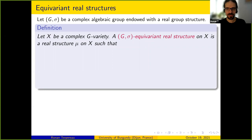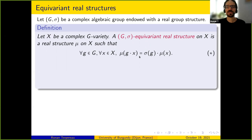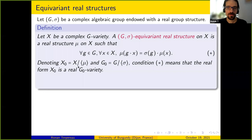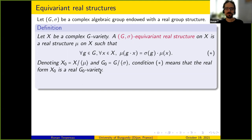This condition means that when you do the quotient X/μ, calling it X_0, this quotient is endowed with a G_0-action, where G_0 is the real algebraic group G/σ. You obtain a real algebraic variety endowed with a G_0-action such that when you complexify, you get back to X as a G-variety. So X and G are given, G_0 is fixed, and you are looking for all possible X_0 such that complexification recovers G acting on X.